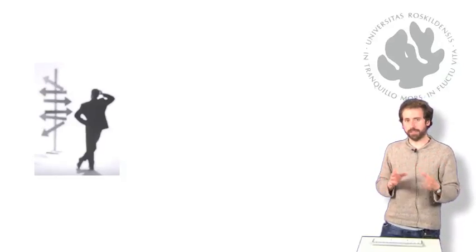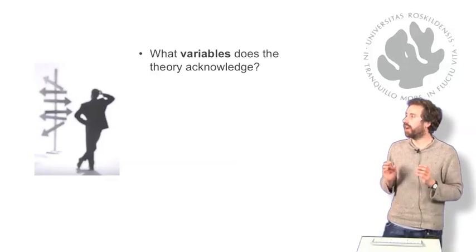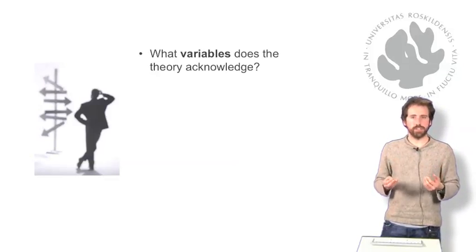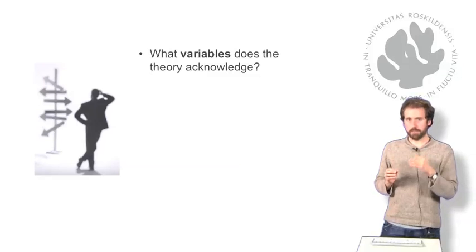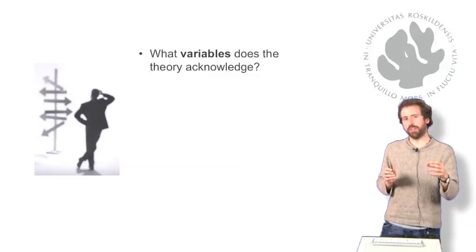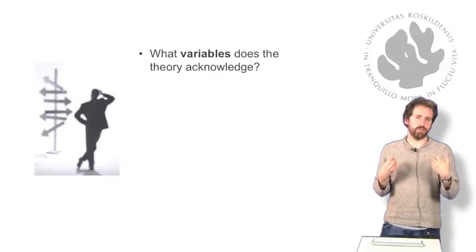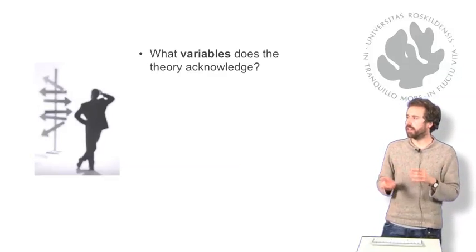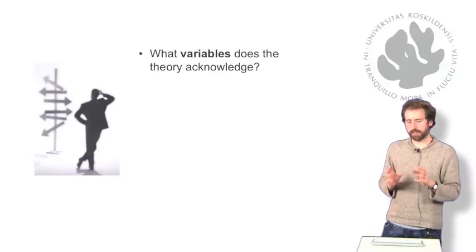So what kind of questions are you going to ask when you are selecting between different theories? Well, the first question is what variables does the theory acknowledge? Different theories have different understandings of the world. They put weight on different aspects of the world. So, which aspects are most relevant to this theory? Which aspects are you going to be talking about because you've chosen this theory?